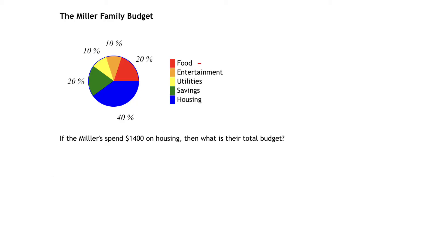For instance, red represents the color of food — or the amount of money spent on food in the budget — and that's 20%. We see that by seeing the 20% red segment. Entertainment is the orange segment, so the Millers spend approximately 10% of their budget on entertainment, and so forth.